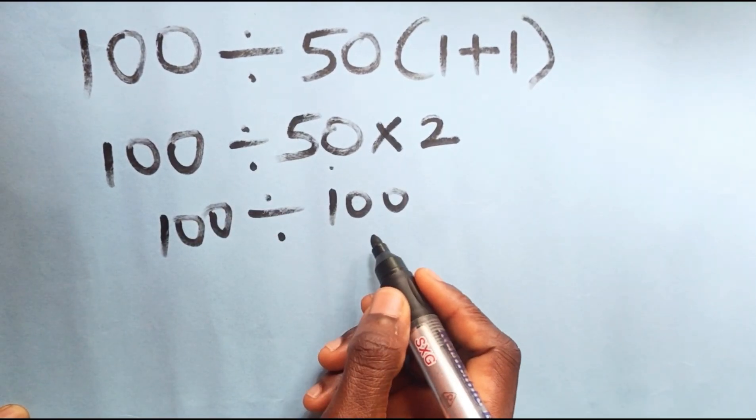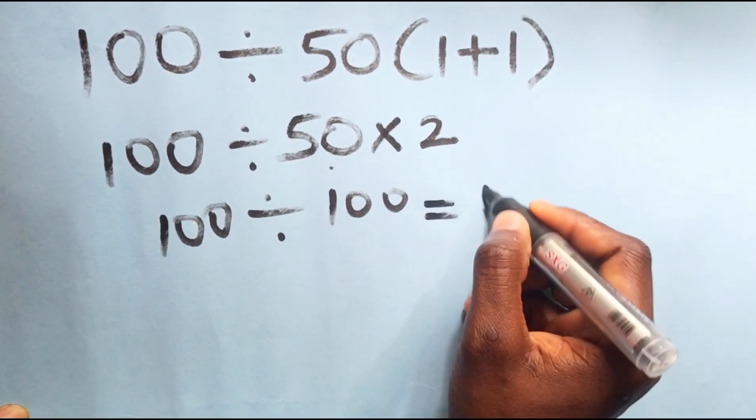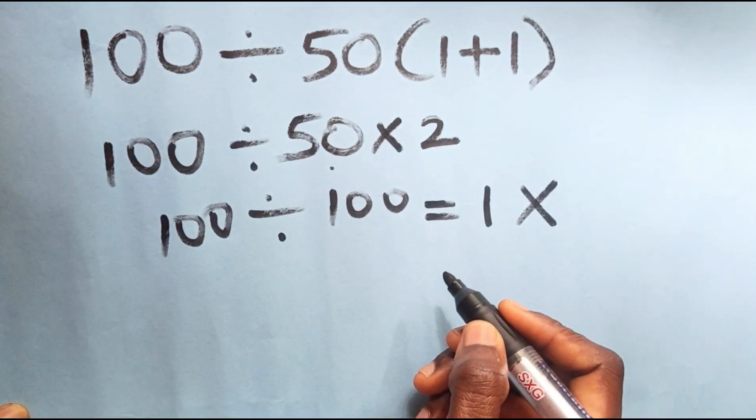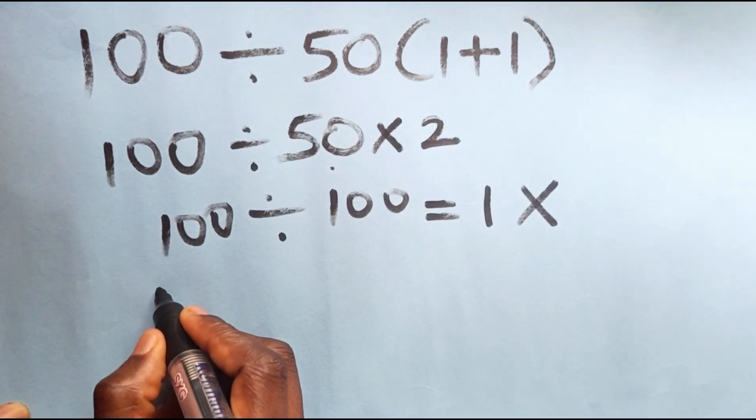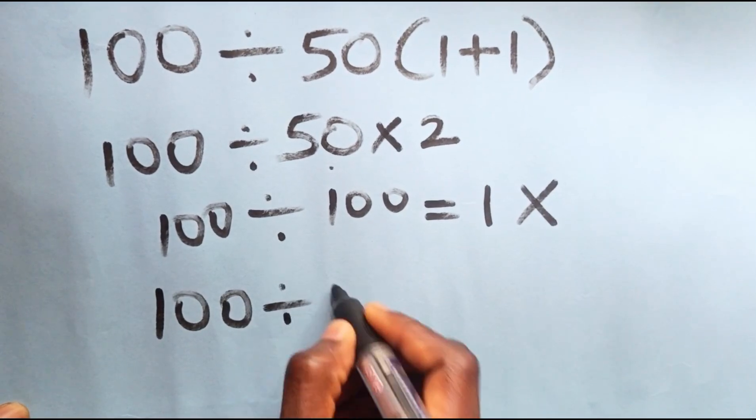100 divided by 100 equals 1, but this answer is incorrect. You have 100 divided by 50 into bracket 1 plus 1.